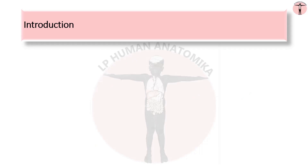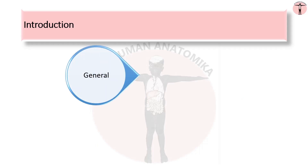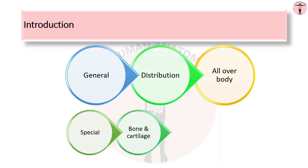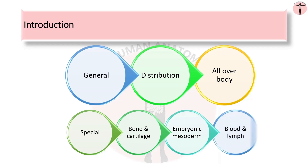The connective tissue is classified broadly into general and special. The ordinary or general type of connective tissue is distributed all over the body. The special type forms certain well-differentiated tissues like bone and cartilage. The greater part of connective tissue develops from embryonic mesoderm. A number of cell types is also found in the blood and lymph.